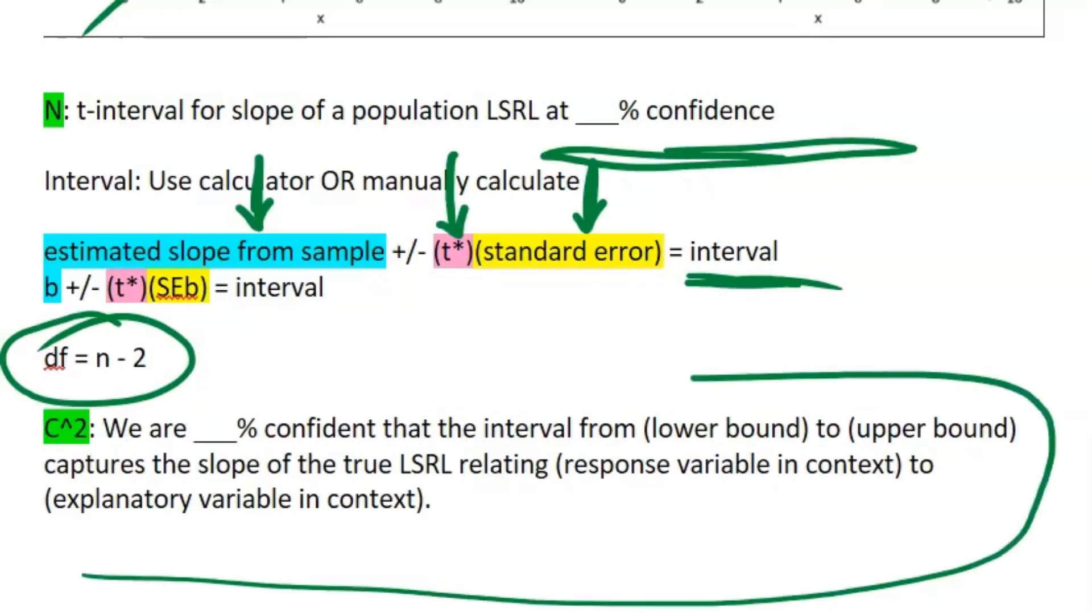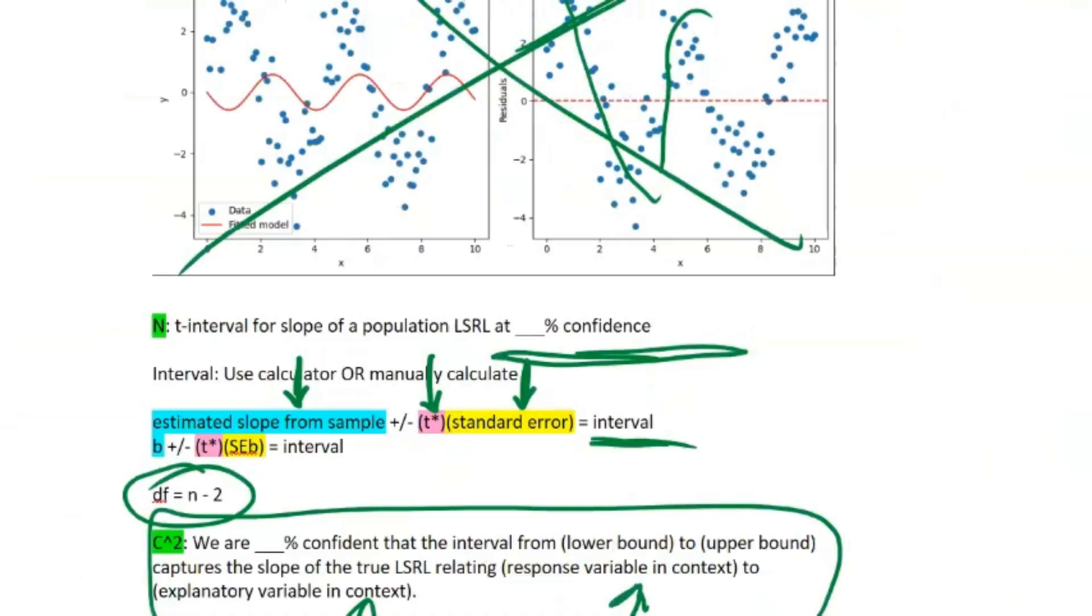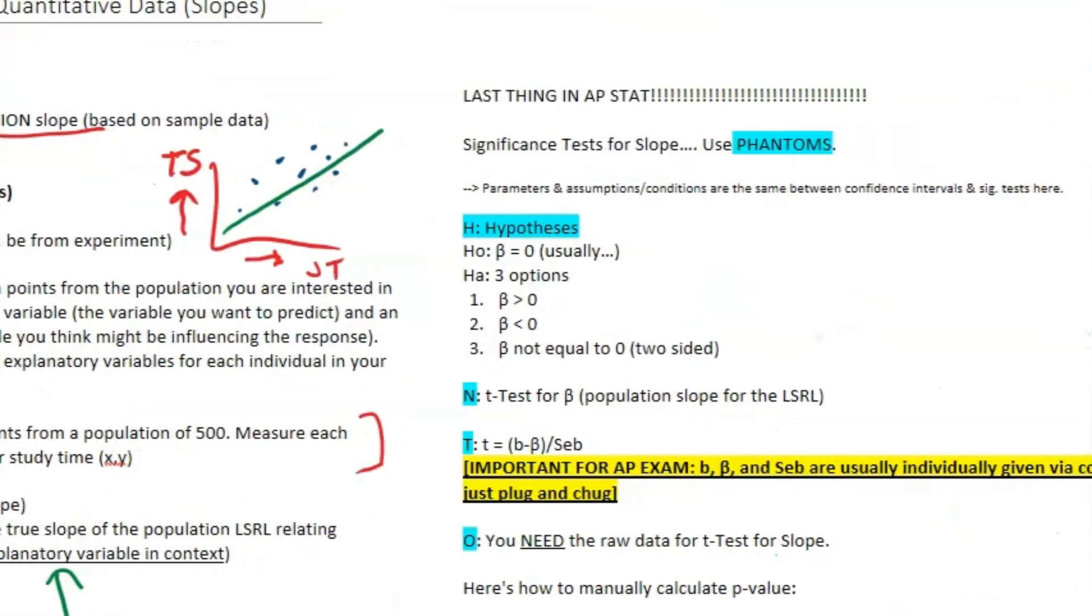Finally, your conclusion: same thing as before. We are blank percent confident the interval from blank to blank captures the true slope, captures the slope of the true least squares regression line relating your two variables in context. I always remember to do it in context because AP graders love to see that.